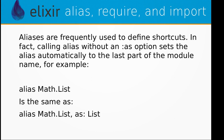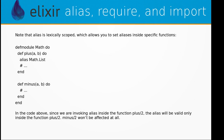However, for convenience you can omit Elixir. when referencing them. Aliases are frequently used to define shortcuts. In fact, calling alias without the :as option sets the alias automatically to the last part of the module name. For example, alias Math.List is the same as alias Math.List, as: :List. Note that alias is lexically scoped, which allows you to set aliases inside specific functions.